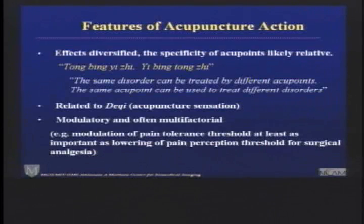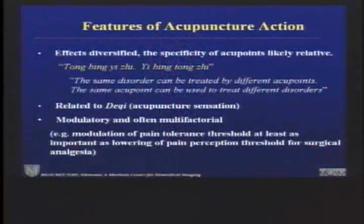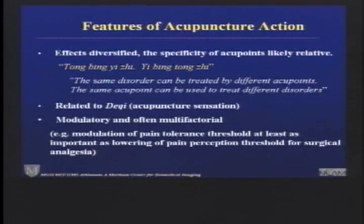Finally, the effects seem to be modulatory and multifactorial — rather than a quick and absolute response, acupuncture seems to affect systems in multiple ways. For example, modulation of pain threshold and tolerance threshold may be as important as the lowering of the perception of pain in surgical anesthesia. So the question is, given all this diversity of responses, how can we begin to connect the dots to come up with some kind of unifying neurobiological hypothesis?